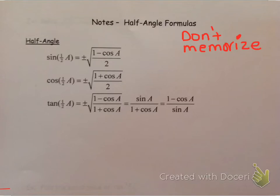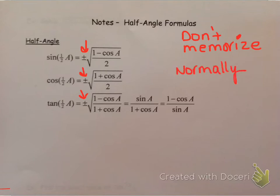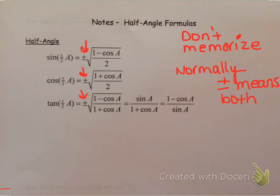The first thing I want you to notice is the plus or minus symbol in front of three of the identities. Normally plus or minus means do both — look for the positive answer and the negative answer. But in this particular set of identities, plus or minus means you have to figure out which one.